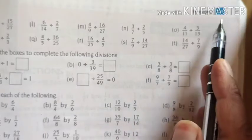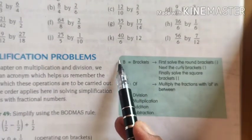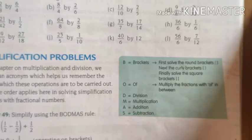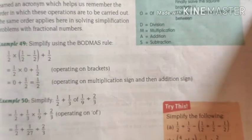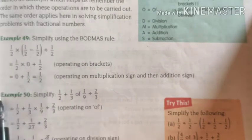Then on page number 111 we have simplification problems. This simplification will be solved according to BODMAS. This we have already discussed in the previous exercise. And here questions are not given based on this.